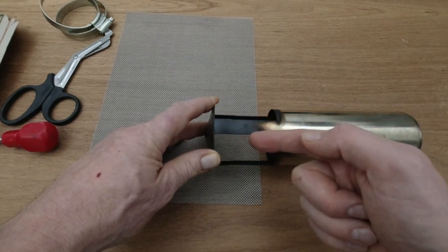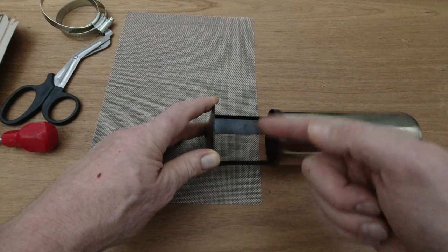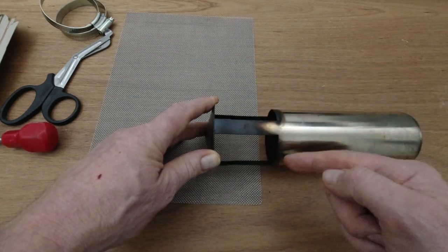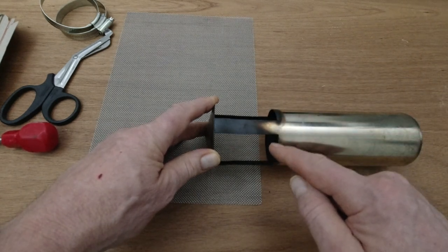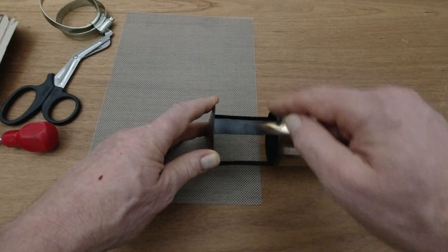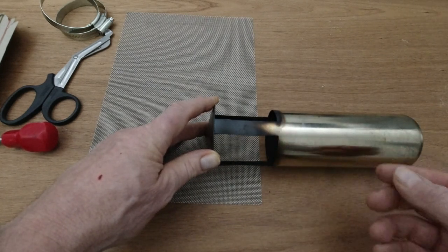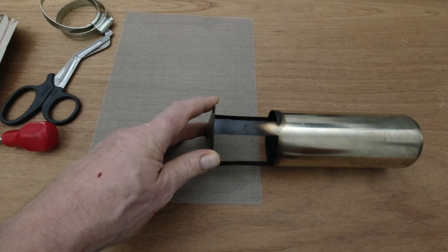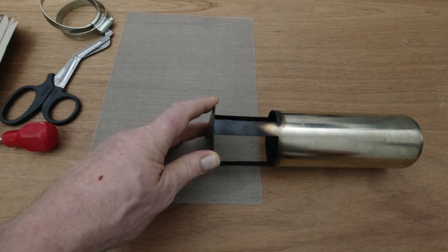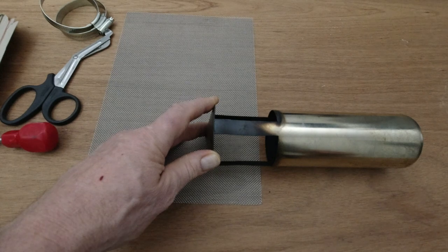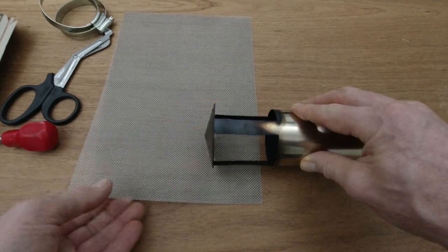I do want to make sure that smoke can get out freely because that mesh is quite fine, so I'm just going to leave a little bit of a gap there so it doesn't create a backdraft of smoke into the stove and into the tent.